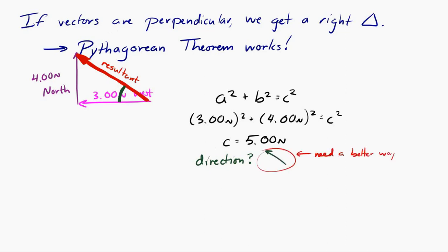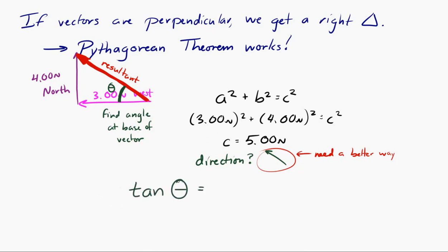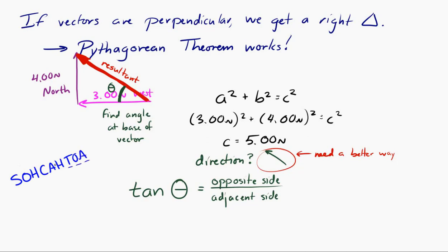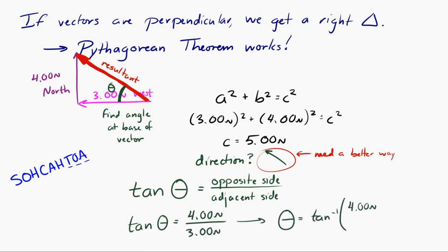We'll find an angle at the base of the resultant vector. To find this angle, I can use tangent — the tangent of the angle equals the opposite side over the adjacent side. If you don't remember that, go back to SOHCAHTOA to remember sine, cosine, and tangent. We take the inverse tangent of both sides, so the angle equals the inverse tangent of 4 Newtons divided by 3 Newtons, which equals 53.1 degrees.